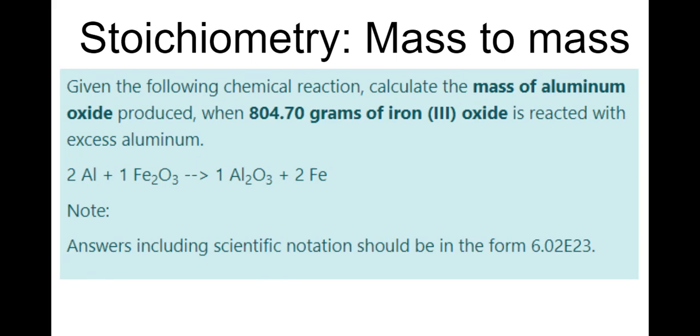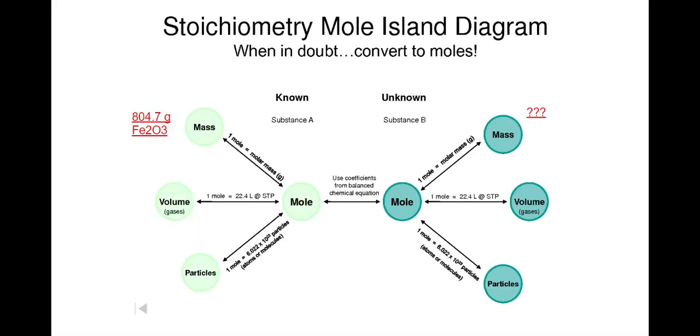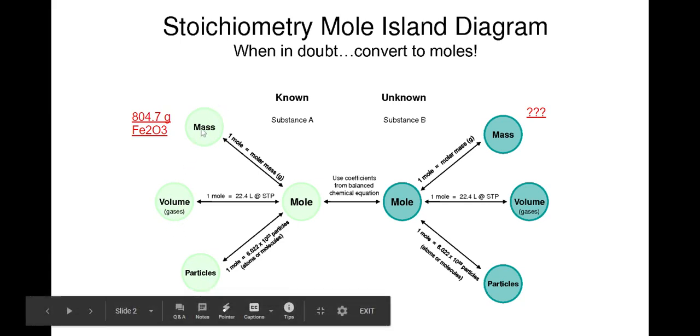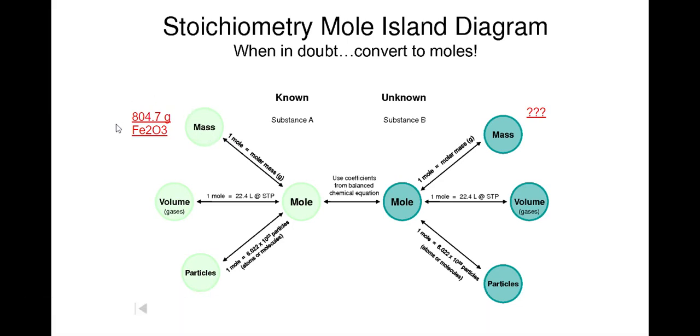Let me show you a tool that I'm going to give you called a mole island diagram. It's just basically, you can use this tool to help you organize your stoichiometry, but this is how you'll do it. First, you figure out what your known is. In this case, we were given a mass of iron(III) oxide. So I just note, I'm going to start right here. 804.70 grams Fe2O3.